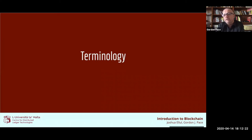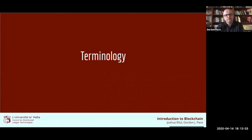Lauren asked whether a private blockchain still has the distributed part in DLT. In computer science, distribution means a number of computers working together — it's not concerned with who owns those computers. A private or permissioned blockchain is one set up with rules defining who can take part. It could be just the Centre for Distributed Ledger Technologies, or include specific named participants. The distributed part is still there because different computers are working together. Running a blockchain on a single computer is probably not a good idea.